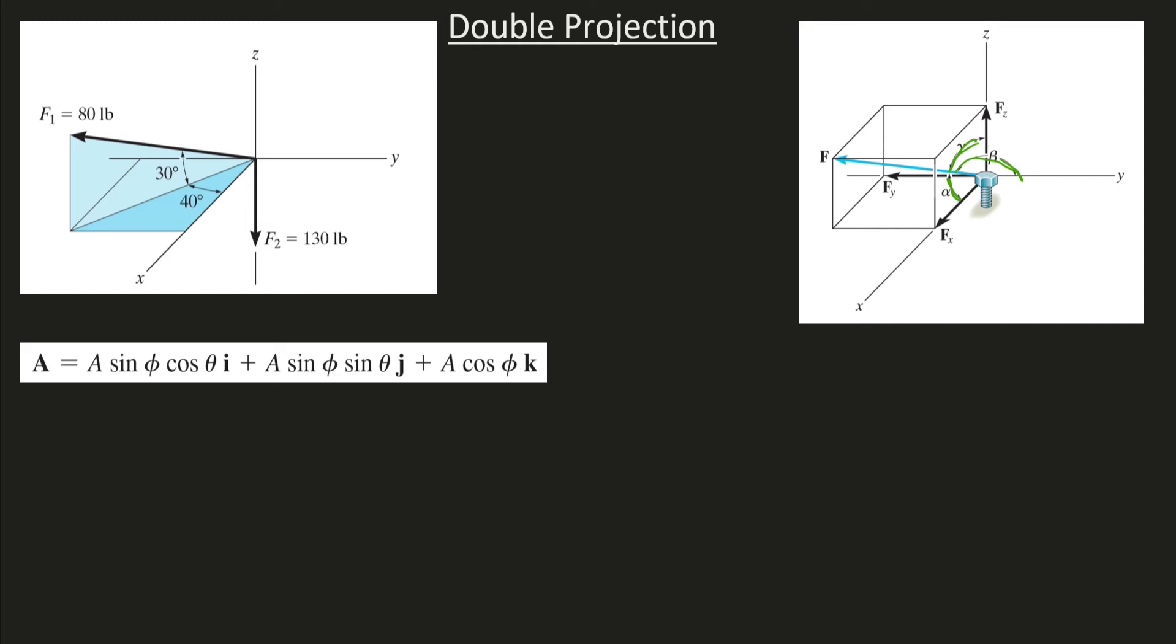Now the other way is this double projection technique. And a lot of teachers may throw this at you and just say, oh yes, if you see something like this, you use this. You can really understand where this comes from. And if you really understand the trigonometry of it, you don't even have to memorize this. You can find the components on your own just by using right triangle trigonometry.